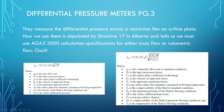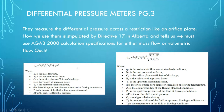Differential pressure meters measure the differential pressure across a restriction like an orifice plate. Directive 17 in Alberta stipulates we must use AGA 3 year 2000 calculations for either mass flow or volumetric flow. There are elaborate calculations involved. The key difference between calculating mass flow rate for a liquid versus volumetric flow at standard conditions for a gas is the variable Z, which relates to compressibility.